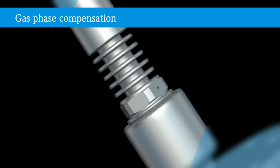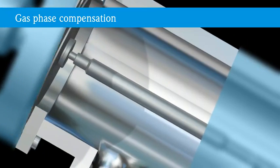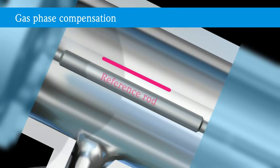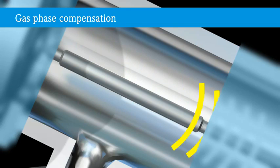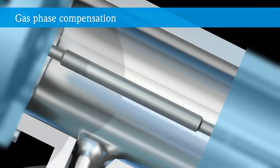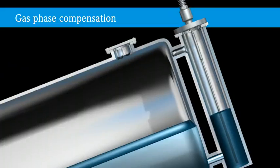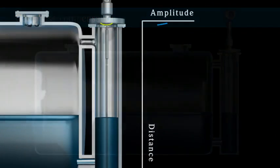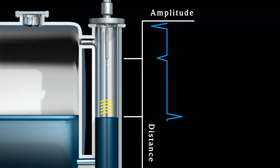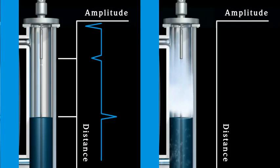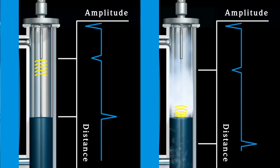LevelFlex M with active gas phase compensation uses a reference signal at a known distance to compensate for the delay and speed of propagation of the microwave pulse measuring the water level. This is done dynamically. For example, when the reference pulse signal shows a small shift in time, the level signal will be compensated proportionally.